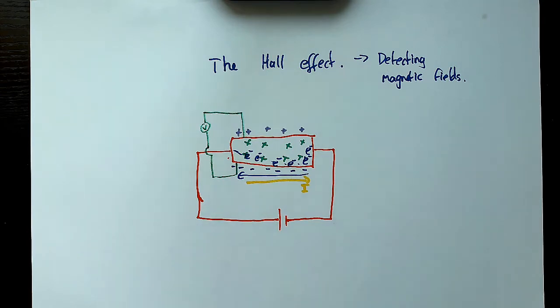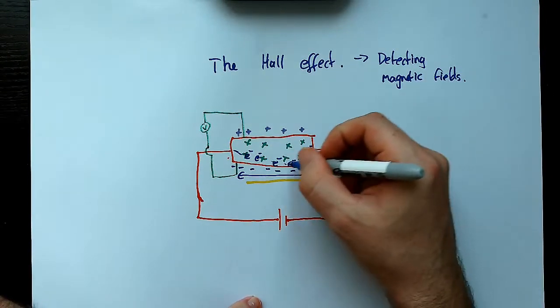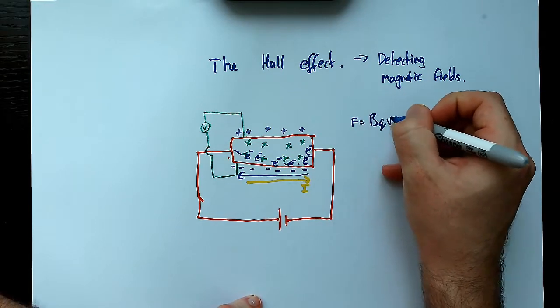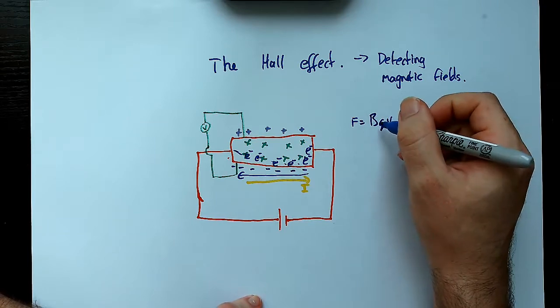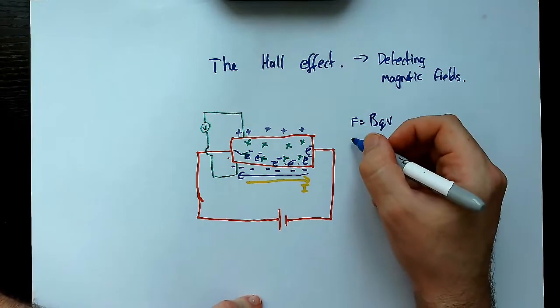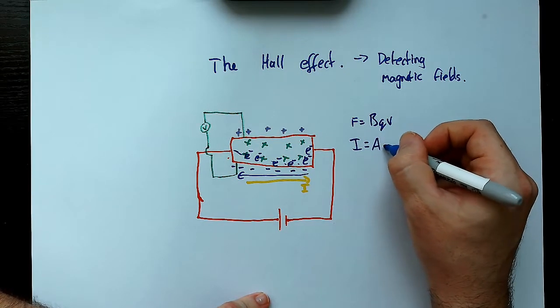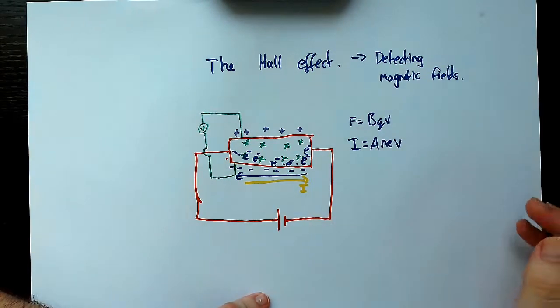So there is an equation that allows this to all come together, and it's born out of multiple equations. So you've got to remember that the force felt here comes out of this equation, which is the force felt on a charge carrier in a magnetic field. And also one you may know from AS, which is the electron drift velocity equation. This one here. Now I'm not going to derive that here. There's lots of videos on YouTube deriving that.